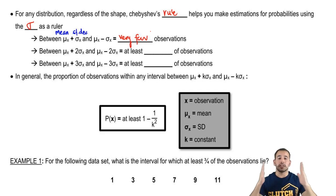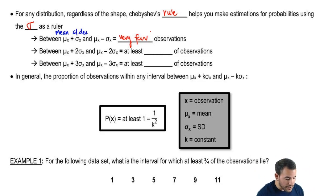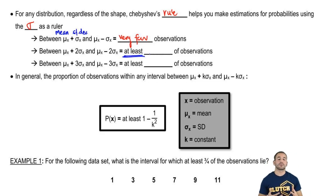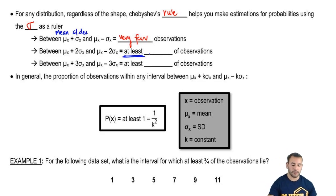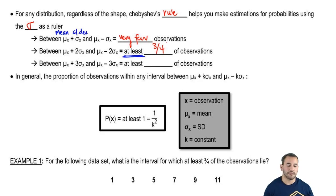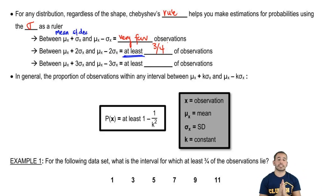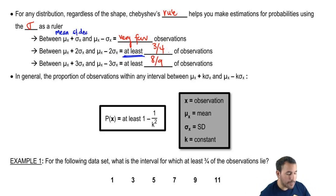But now, between two standard deviations away from the mean — the mean above two and the mean below two — you have at least, and 'at least' is a very key word. It's not that there's exactly that many observations, because this rule is contingent on the idea that we don't know the shape of the distribution. So we can say at least three-fourths, or 75%, fall within that interval. And between the mean above and below three standard deviations, there are at least eight-ninths of observations.